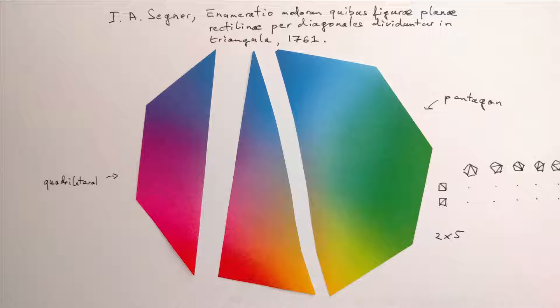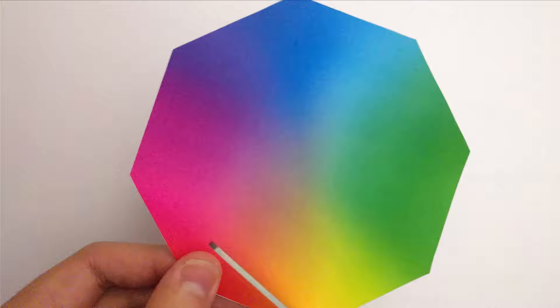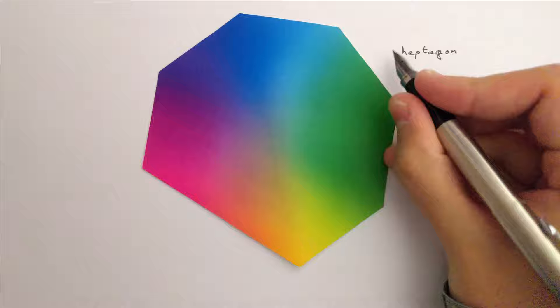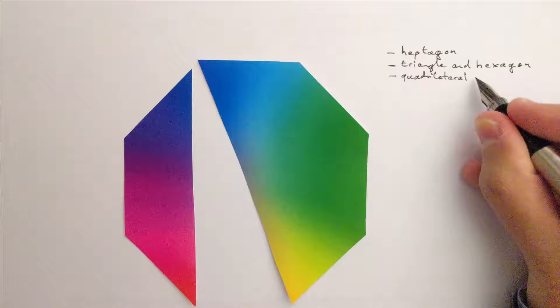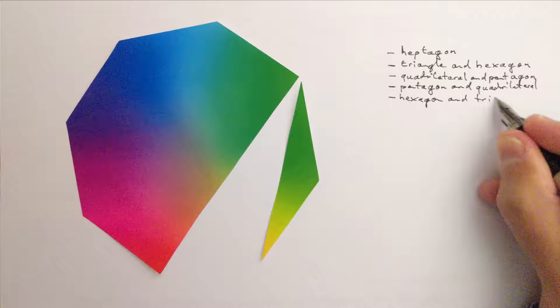Depending on the choice of the third corner of the triangle with the red-orange edge, we may be left with nothing on one side and a heptagon on the other, a triangle and a hexagon, a four-sided polygon and a pentagon as we just saw, a pentagon and a four-sided polygon, a hexagon and a triangle, or a heptagon and nothing.